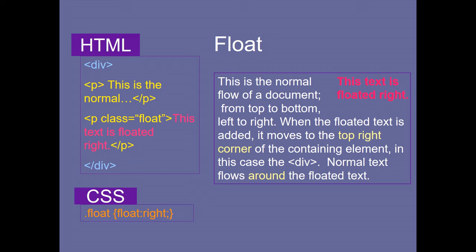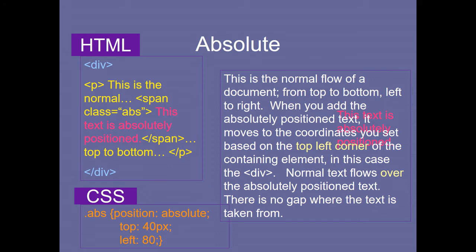Float: the normal flow goes top to bottom, left to right. When floated text is added — for example, a paragraph with class 'float' — it moves to the top-right corner of the containing element. Inside a division there is a paragraph, then a floated paragraph; the floated element goes to the top-right corner and normal text wraps around it. As text increases, the floated element always stays in the top-right corner.